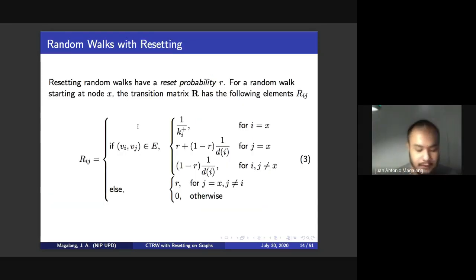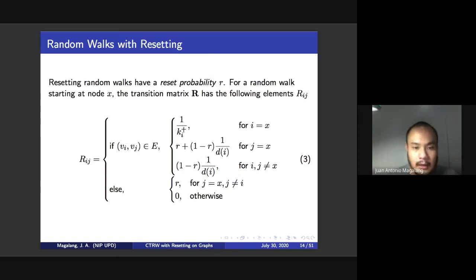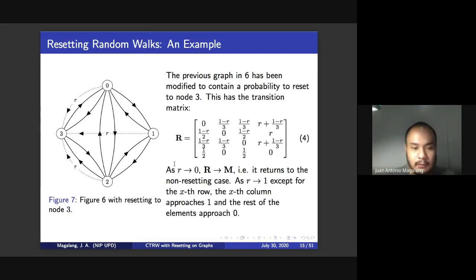Now we want to include resetting on this graph here in figure six. To do that, we have to modify the transition matrix as well, since you're modifying the graph. So to get the transition matrix for a resetting random walk, we take these conditions from equation three. And from our example earlier in figure six, we have now figure seven that demonstrates a resetting random walk where the walker starts at node three. So this has a corresponding transition matrix given by equation four.